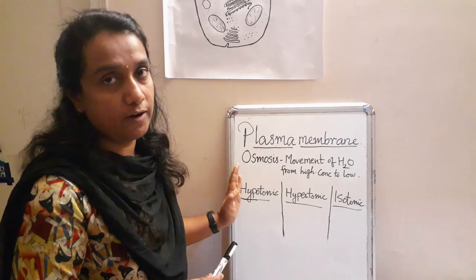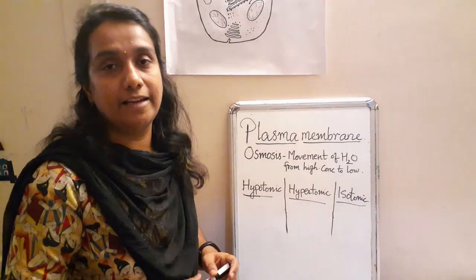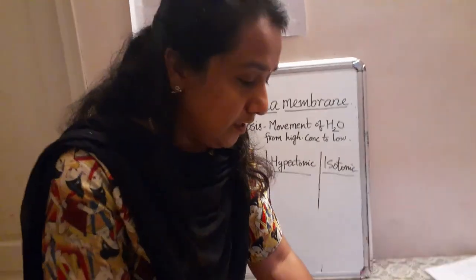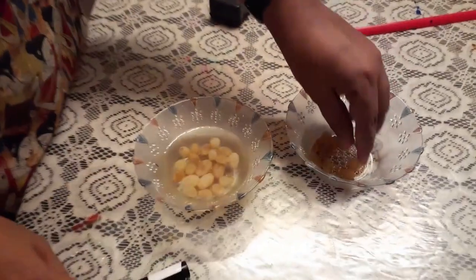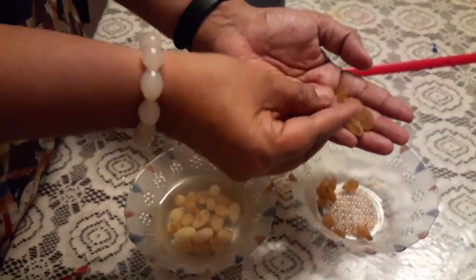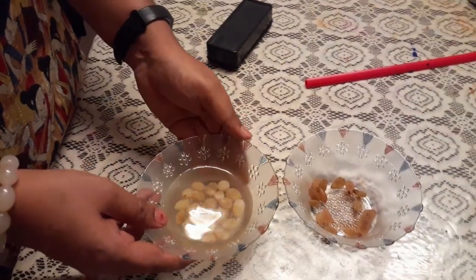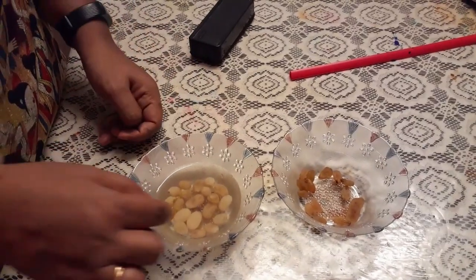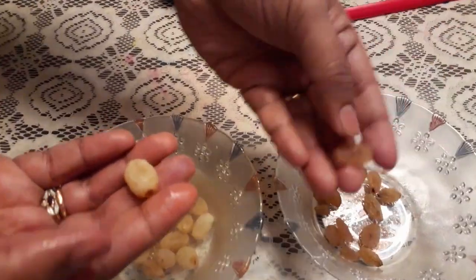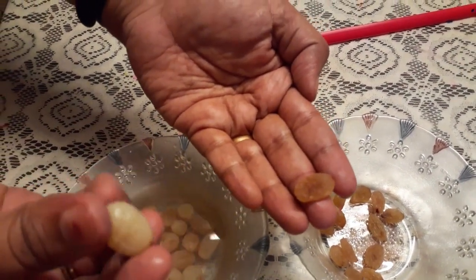First we will see hypotonic solution. We can see these examples in our daily life. I have taken raisins — dry grapes. I soaked these dry grapes inside water for 6 to 7 hours. We can observe that these grapes swelled up. These are the dry grapes before, and after keeping them inside the water, they swelled up.